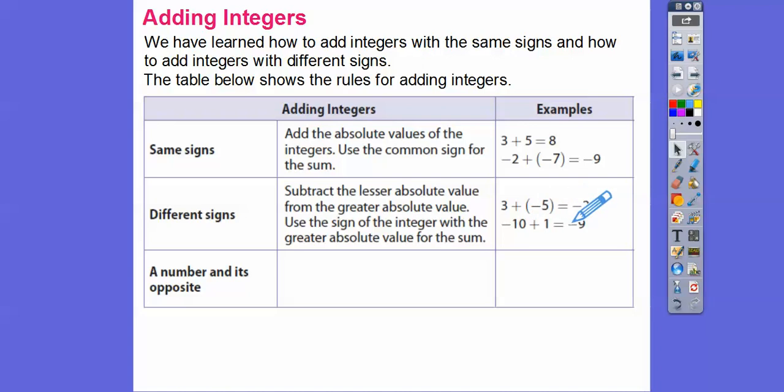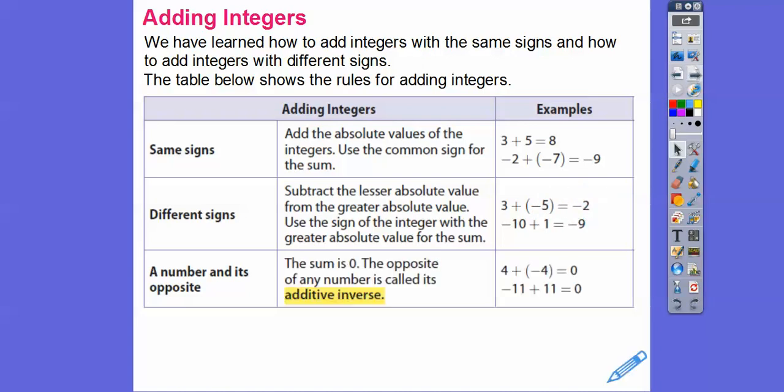When we're adding a number and its opposite, it always equals 0, and that's called the additive inverse. You'll see that definition more in high school. All that means is you're adding a number and its opposite. So 4 plus negative 4 equals 0. Negative 11 plus 11 equals 0. One half plus negative one half equals 0.